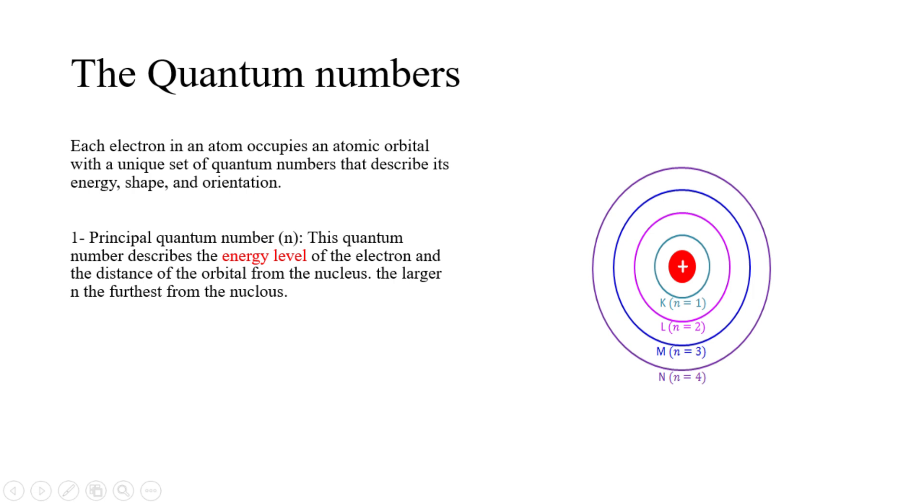Each electron in an atom occupies an atomic orbital with a unique set of quantum numbers that describe its energy, shape, and orientation. Number one: Principal quantum number, called n. This quantum number describes the energy level of the electron and the distance of the orbital from the nucleus. The larger n, the further from the nucleus.